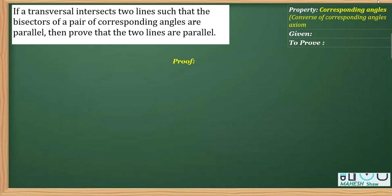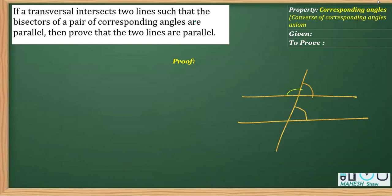If I draw two parallel lines with a transversal, the angles formed are called corresponding angles. These are one pair — this angle will be equal to this one, and similarly, this will be equal to this.